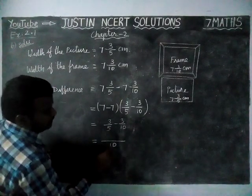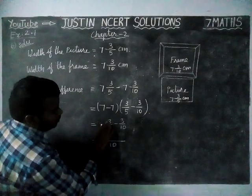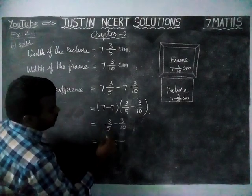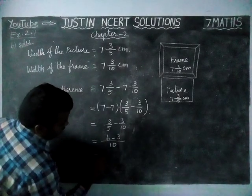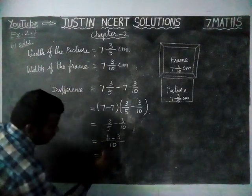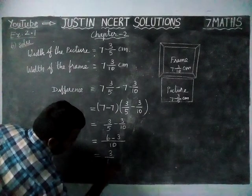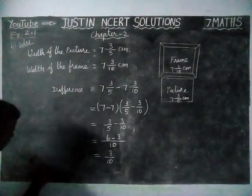Now 5 times 2 is 10, so this also should be multiplied by 2. 3 times 2 equals 6. 6 minus 3 divided by 10 equals 3 by 10.